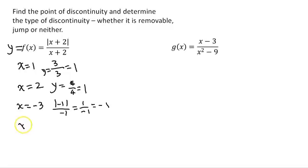What about x equals negative 4? Negative 4 plus 2 is negative 2, absolute value over negative 2, and because the absolute value of negative 2 is positive 2, you get negative 1.